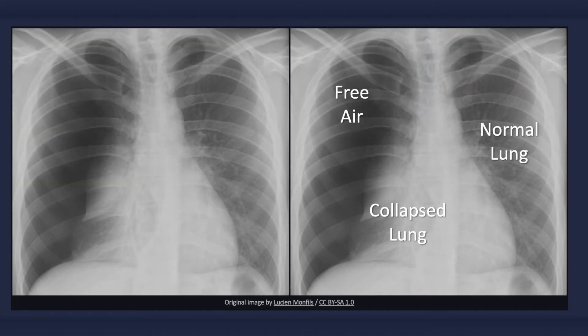Here is a more obvious x-ray of a pneumothorax. No lung markings are visible beyond the border of the right lung, which has collapsed. Notice the increased opacity of the collapsed right lung in comparison to the normal left lung. As well, the right heart border cannot be identified because the collapsed lung is indistinguishable from the heart. This is referred to as the silhouette sign.